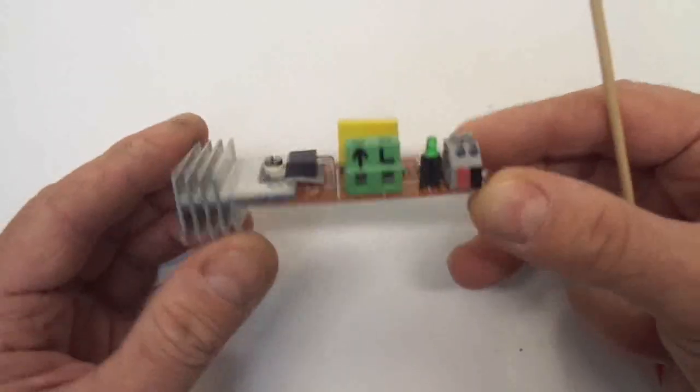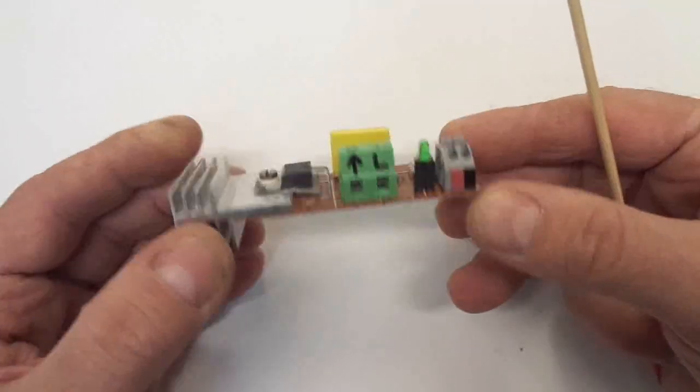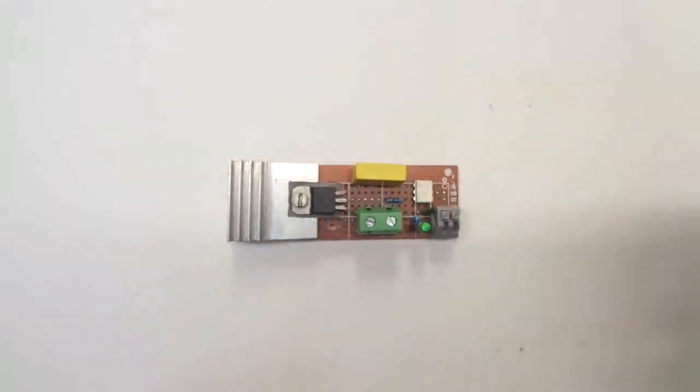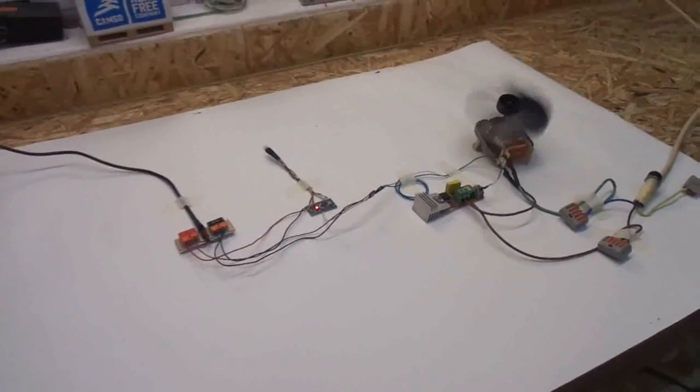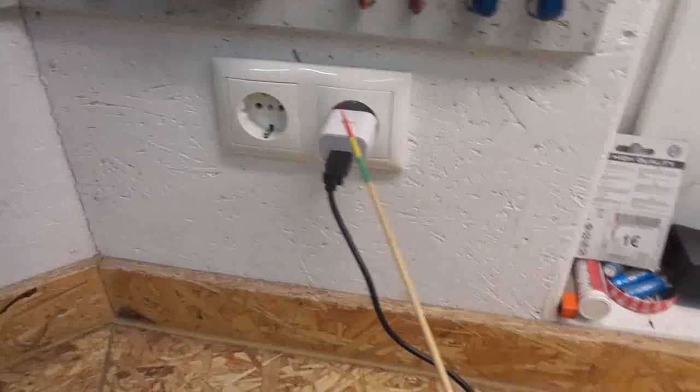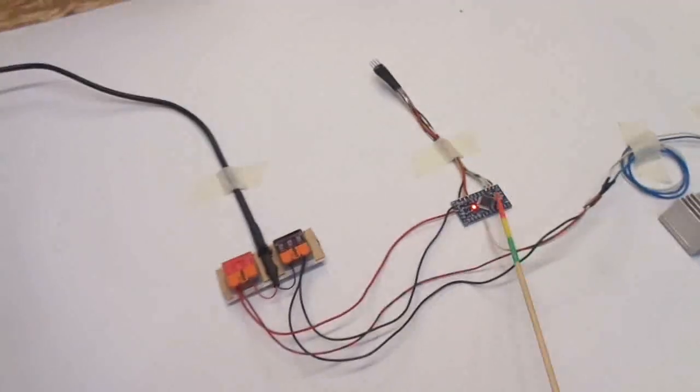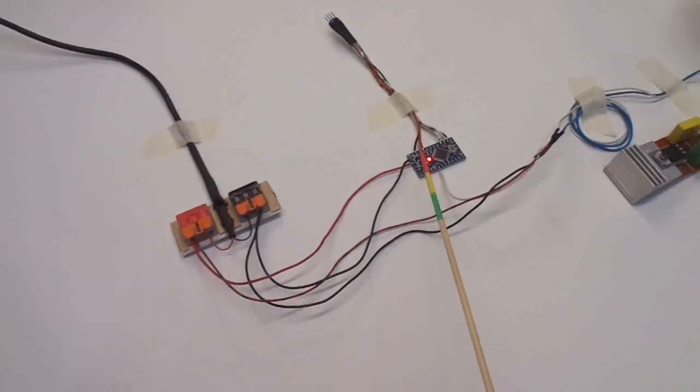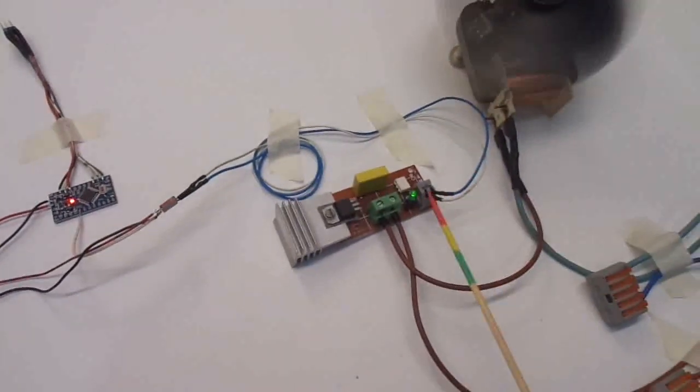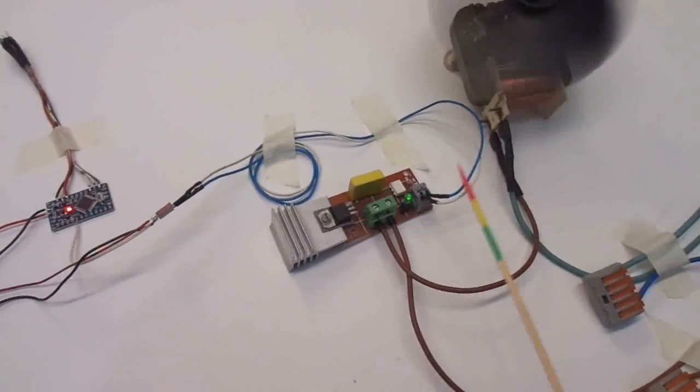So I think it's time to test it out. Here it is - here is my usual test setup, starting with my 5 volt power supply for the Arduino Pro Mini. Signal cable goes to the solid state relay 5 volt.